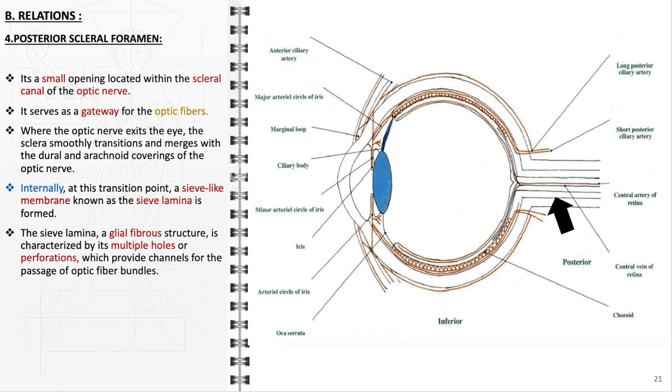Within this area, the formation of the sieve lamina marks an important internal transition. This sieve-like glial fibrous structure is perforated with multiple holes, creating channels that allow the passage of optic fiber bundles. This specialized arrangement is crucial for the efficient and accurate relay of visual signals from the retina to the brain.